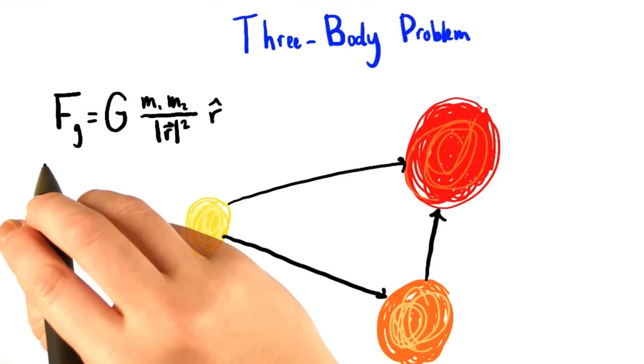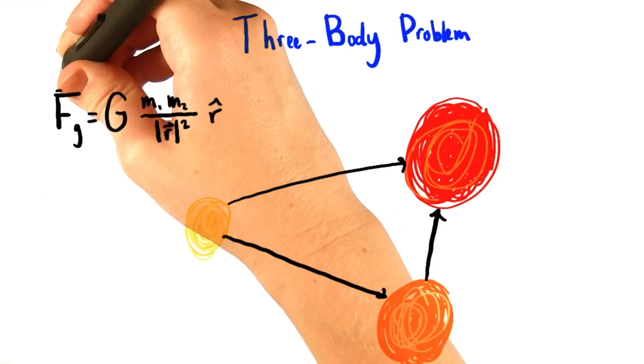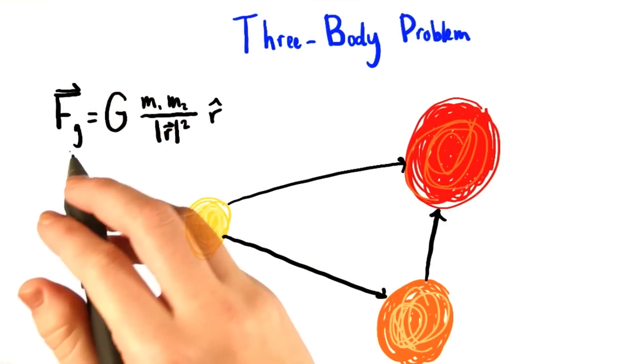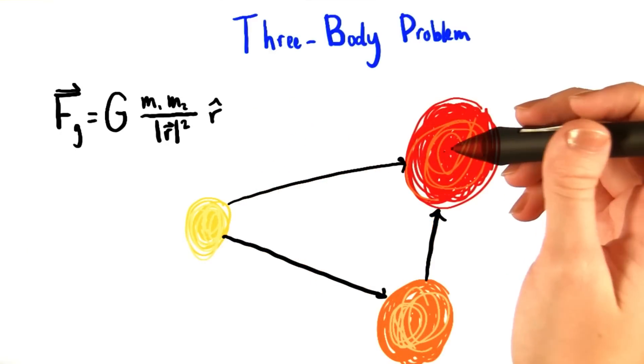To remind us that this force is actually a vector quantity, I'm going to be super explicit and put a vector sign on top of the F. Remember, all three of these bodies exert a force on one another.